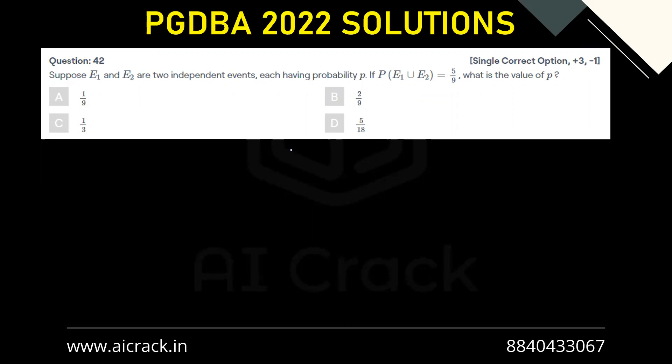Hi everyone, let's solve question number 42. Suppose E1 and E2 are two independent events, each having probability p. If P(E1 ∪ E2) equals five by nine, what is the value of p?